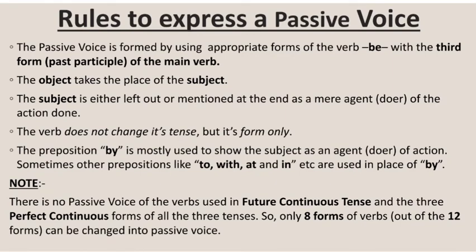There are some rules to follow while changing a sentence from active to passive voice. The passive voice is formed by using appropriate forms of the verb 'be' with the third form of the main verb. The verb 'be' has three forms in present tense: am, is, are; two forms in past tense: was, were; and its third form is 'been', along with the past participle of the main verb.